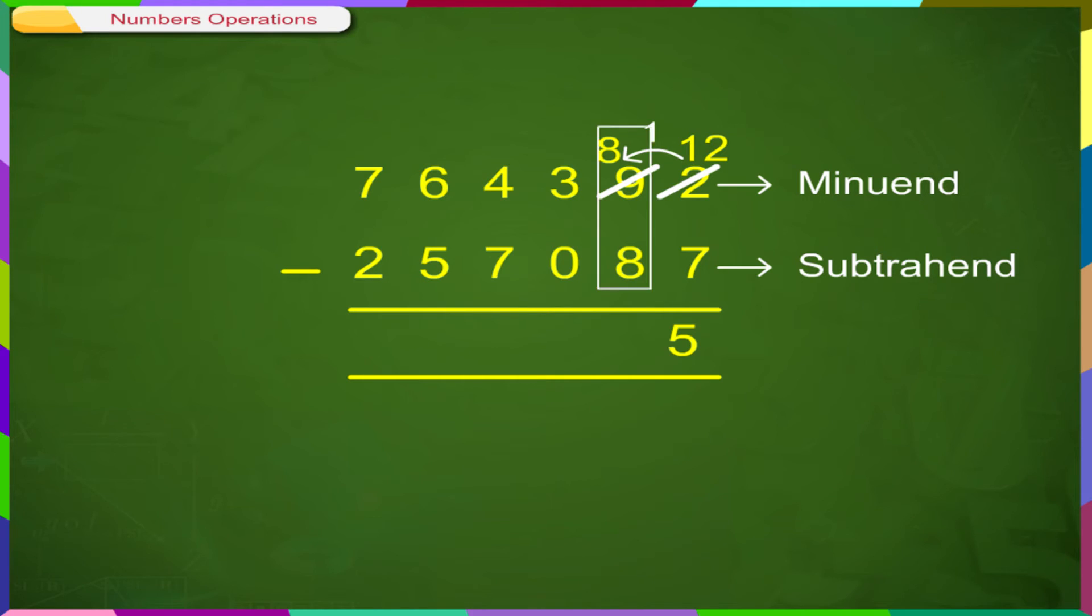Subtracting in the 10's column, 8 minus 8 is equal to 0. Subtracting in the 100's column, 3 minus 0 is equal to 3.